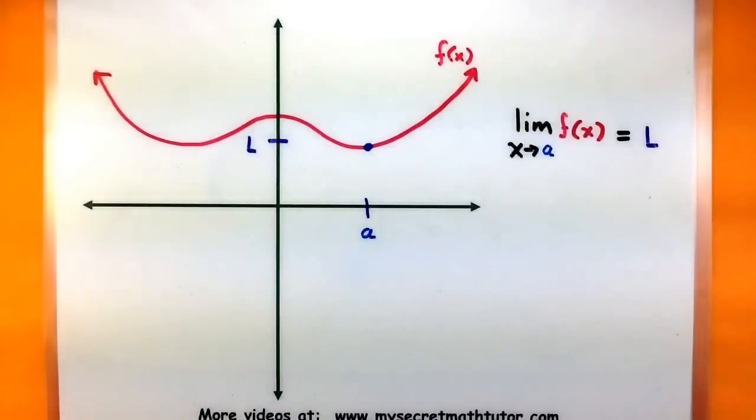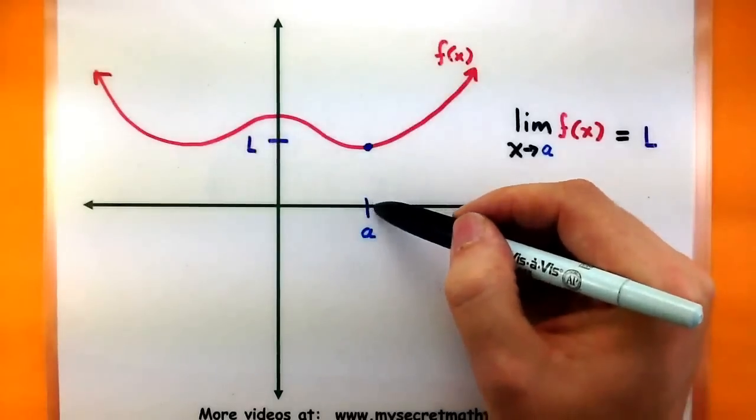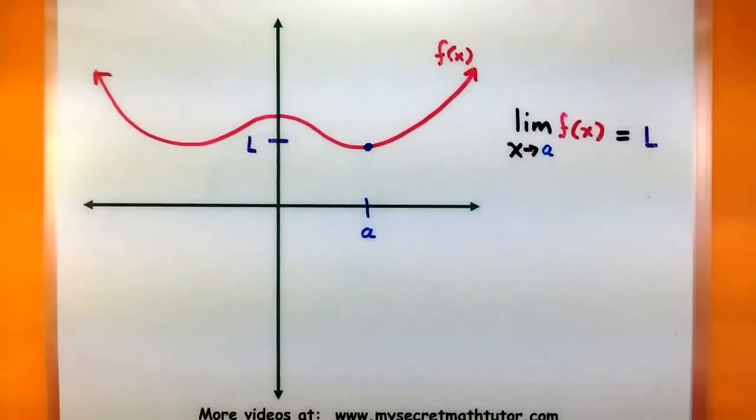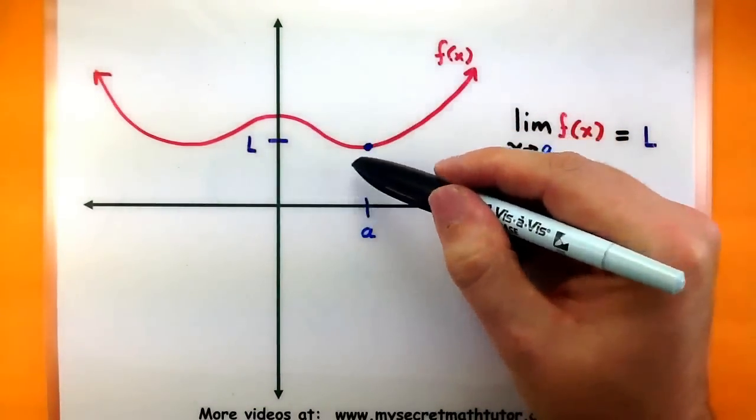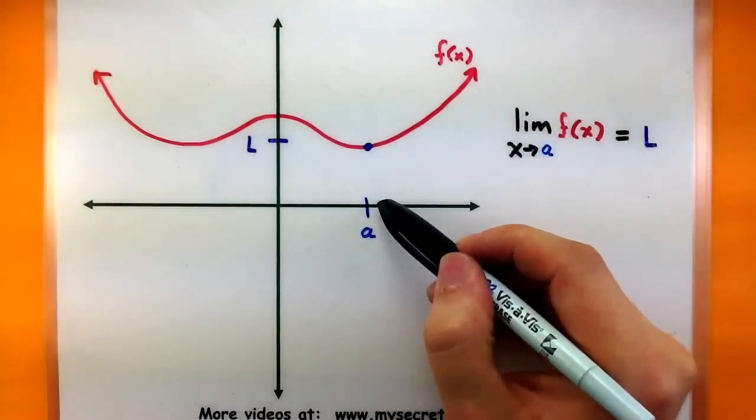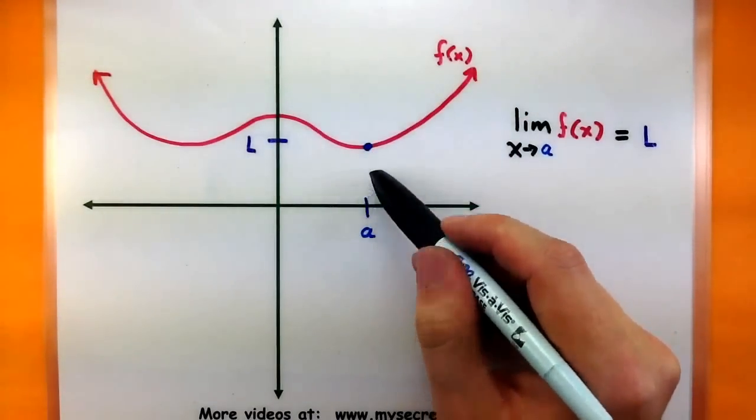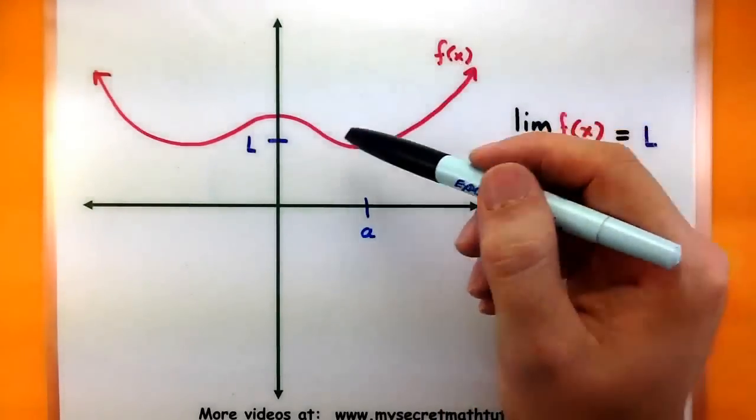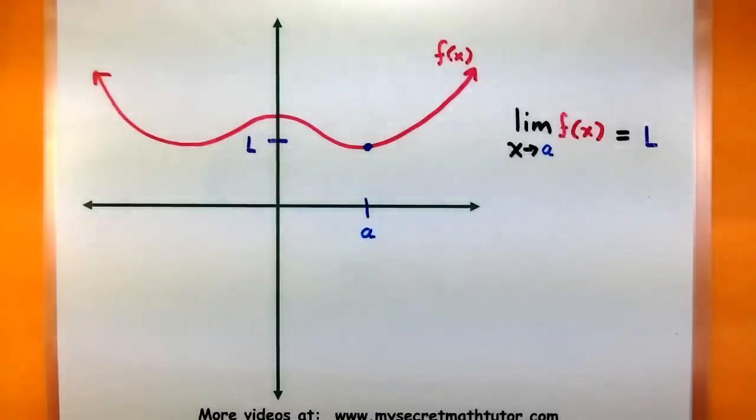Now as I choose x values close to A, maybe on the right side and on the left side, I can look at their corresponding y values. So if I choose these x values close enough to A, and my y values get closer to L, then I can say that this has a limit. In fact, if I can get arbitrarily close to L, basically as close as you want, then I know this has a limit.